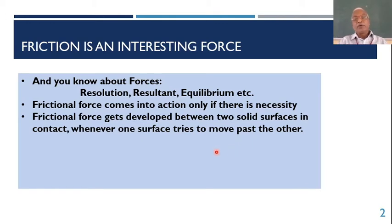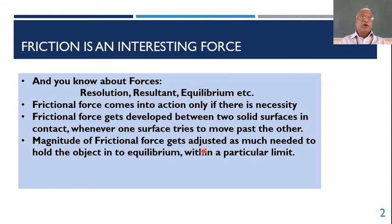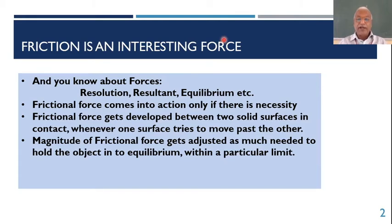This is called dry friction, or friction between two surfaces. The magnitude of frictional force gets adjusted as much as needed to hold the object in equilibrium — of course, within a particular limit. The magnitude of frictional force gets mobilized to bring the body into equilibrium, only to that extent. That is why friction is called an interesting force.